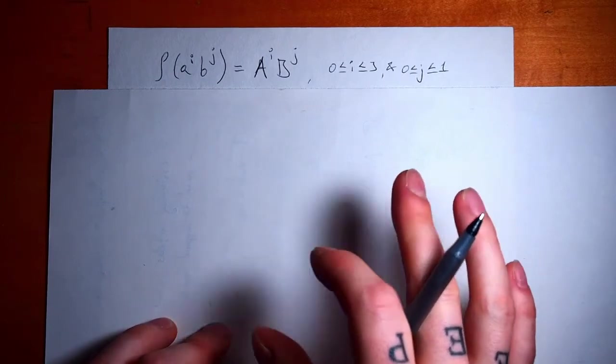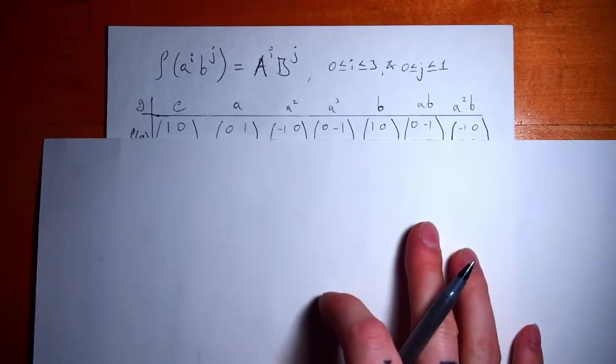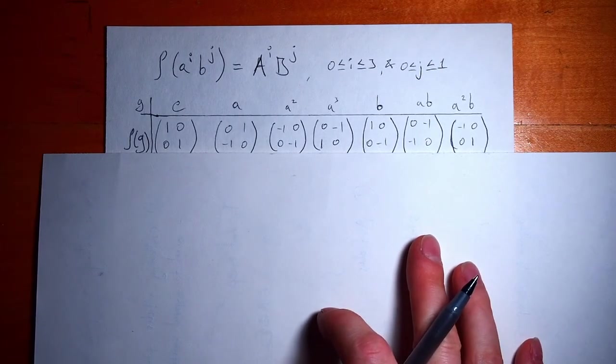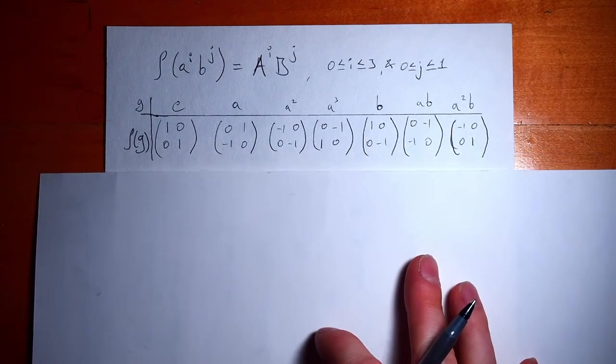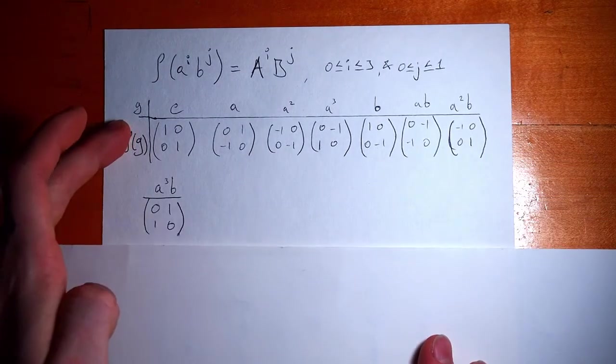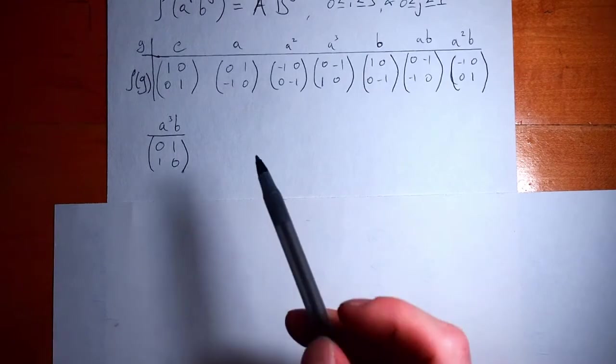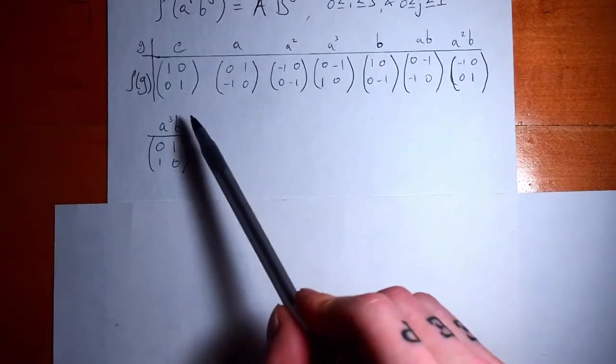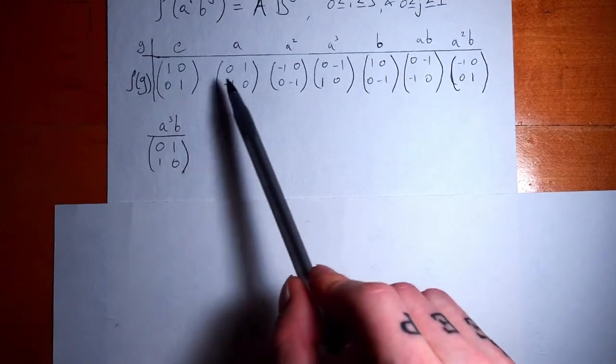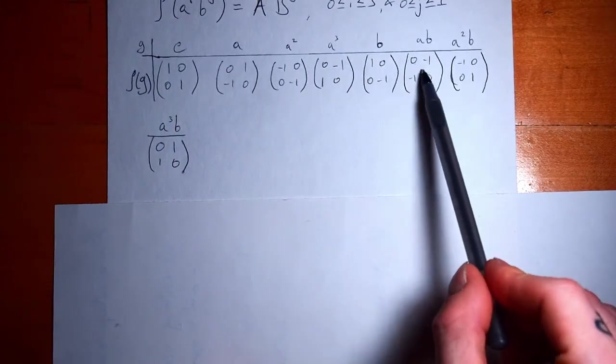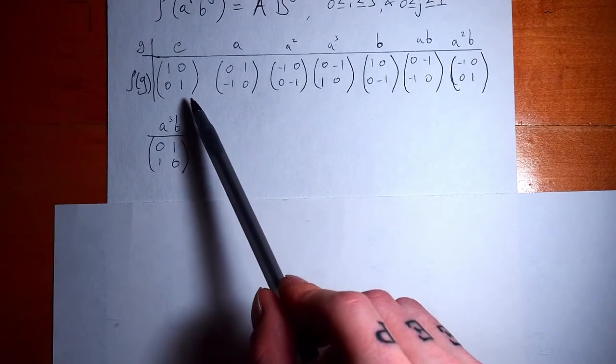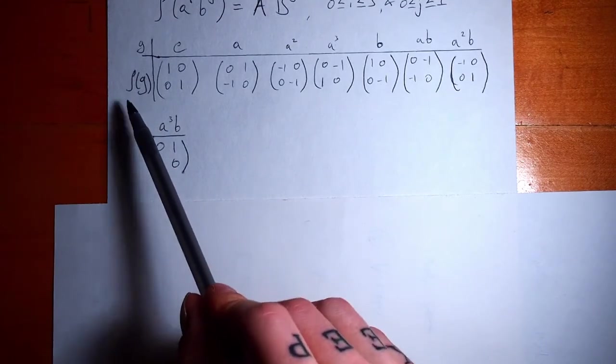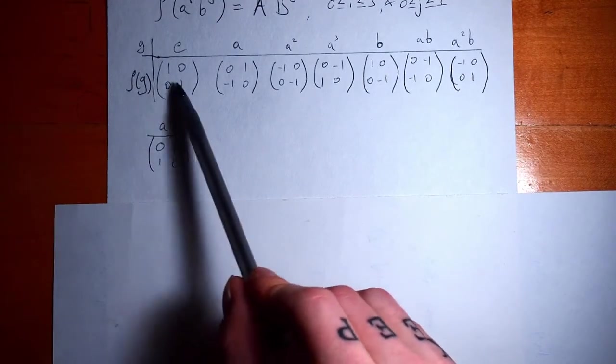Another way that you sometimes see these written out is by a table. And I'm not very good at planning ahead, so my table was one element longer than I was hoping it would be. And so you see, here are all of our group elements from the abstract D8, and here are all of them after they have been mapped. This is the representation of D8 of rho, the representation rho of D8.